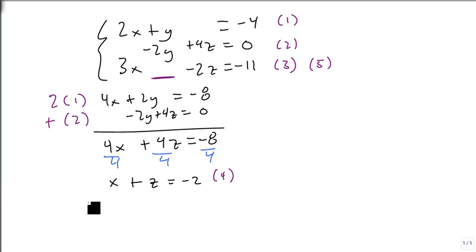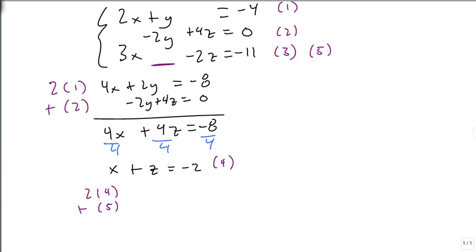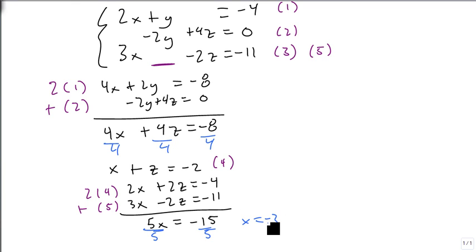So now if I take 2 times equation 4 and add it to equation 5, we will get 2x plus 2z equals minus 4. 3x minus 2z equals minus 11. Add those together and get 5x equals minus 15. So x is minus 3.